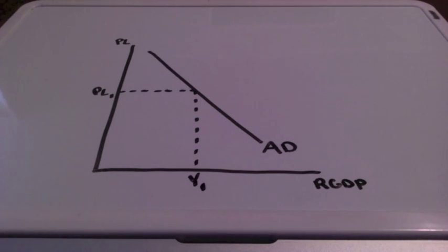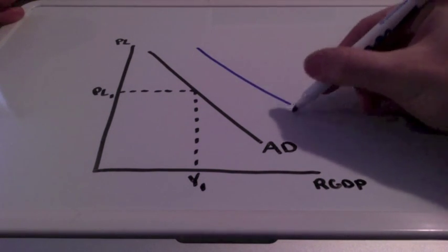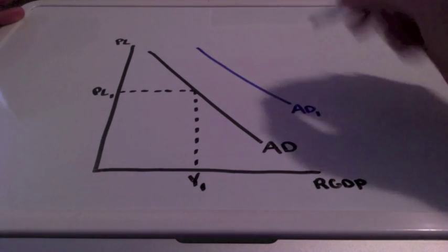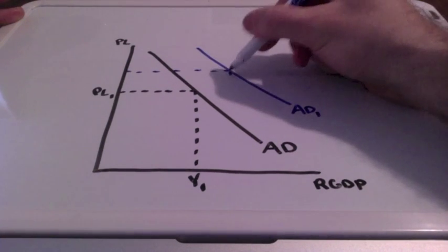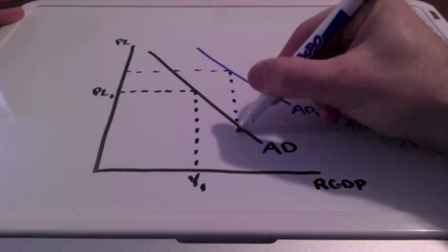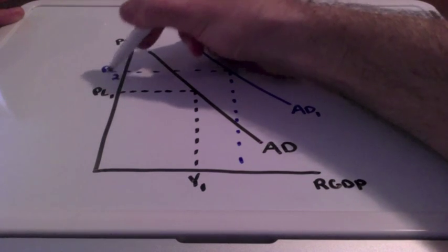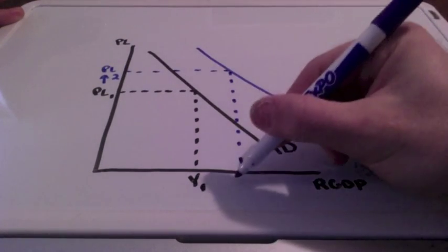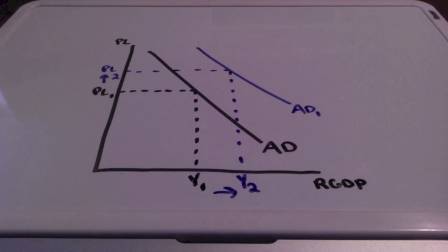There will be situations when both price levels and real GDP are moving in the same direction. For example, during an expansionary policy, the aggregate demand curve will shift to the right creating an entirely new curve which will result in both price levels and real GDP increasing from PL1 to PL2 and from Y1 to Y2. This is seen through expansionary policies.